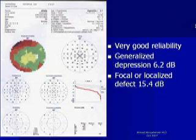Also, if you look to the Bede curve, you will find a focal or localized defect, and its amount can be estimated from the loss variance in the global indices is equal to 15.4 decibels.